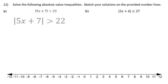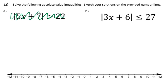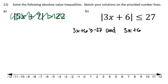For part b, we have the absolute value of 3x plus 6 is less than or equal to 27. Since the absolute value is less than a number, there will be two parts joined by 'and.' Setting up: 3x plus 6 is greater than or equal to negative 27 (flip and opposite), and 3x plus 6 is less than or equal to 27.